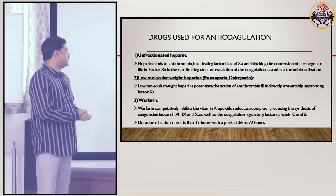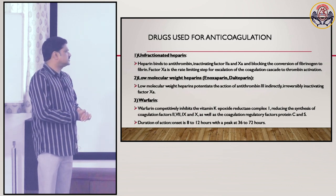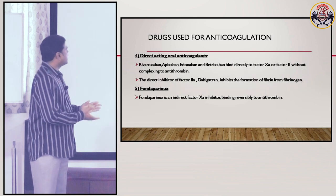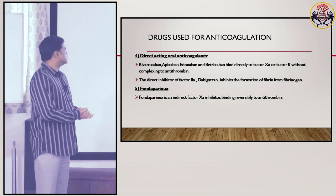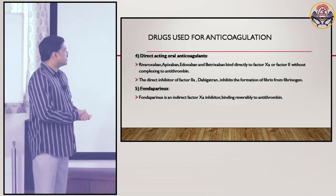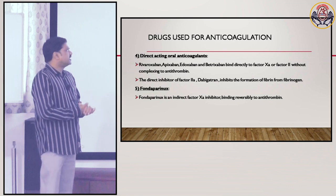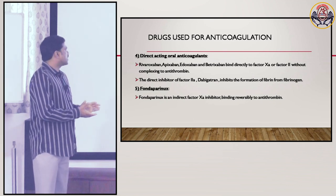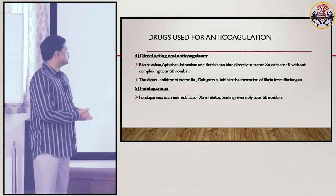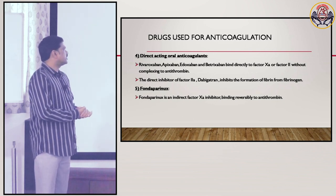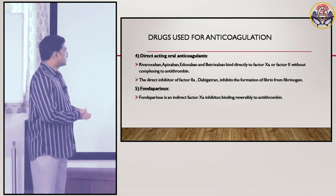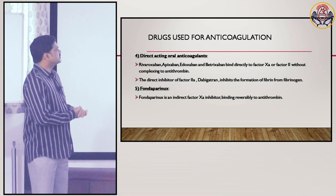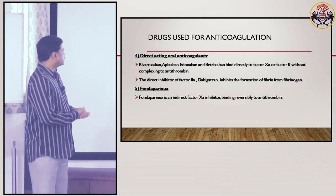Duration of action: onset is 8 to 12 hours with a peak at 36 to 72 hours. Direct acting oral anticoagulants — rivaroxaban, apixaban, edoxaban, betrixaban — bind directly to factor 10a and factor 2a without complexing to antithrombin. The direct inhibitor of factor 2a, dabigatran, inhibits the formation of fibrin from fibrinogen.